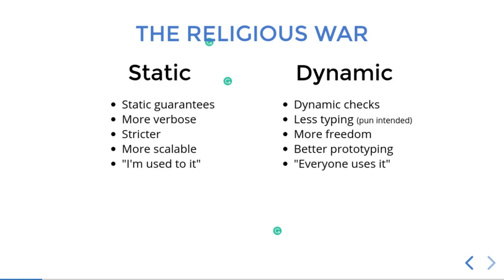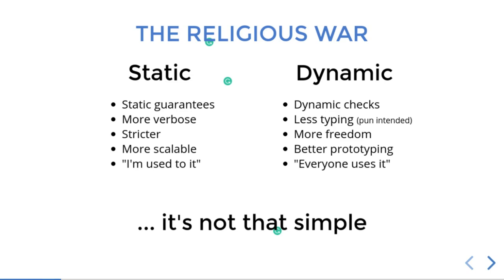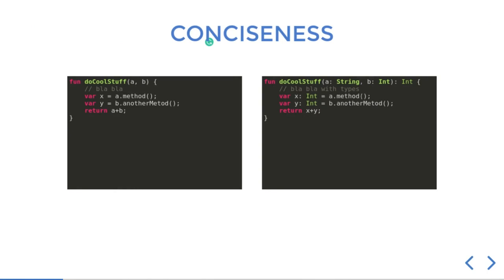Usually you consider static languages more scalable to big projects, and languages like Python or JavaScript better for rapid prototyping. And of course there is some inertia: 'I always do that, I know these languages, I keep doing it,' or 'everyone uses it.' There is some truth in it, but of course every one of these arguments is too simple. When you think about conciseness and verbosity, if you have a very simple piece of code, it may feel like writing types is both boring and not very useful.